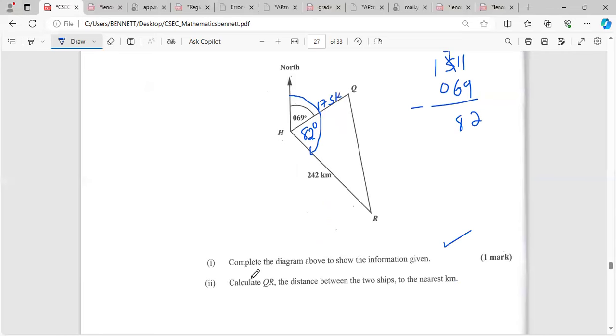Complete the diagram above to show the information given. Calculate QR, the distance from Q to R, which is this distance here. We could use the cosine rule since we have two known sides and an angle in between. So it would be 175 squared plus 242 squared minus 2 times 175 times 242 times cosine 82.